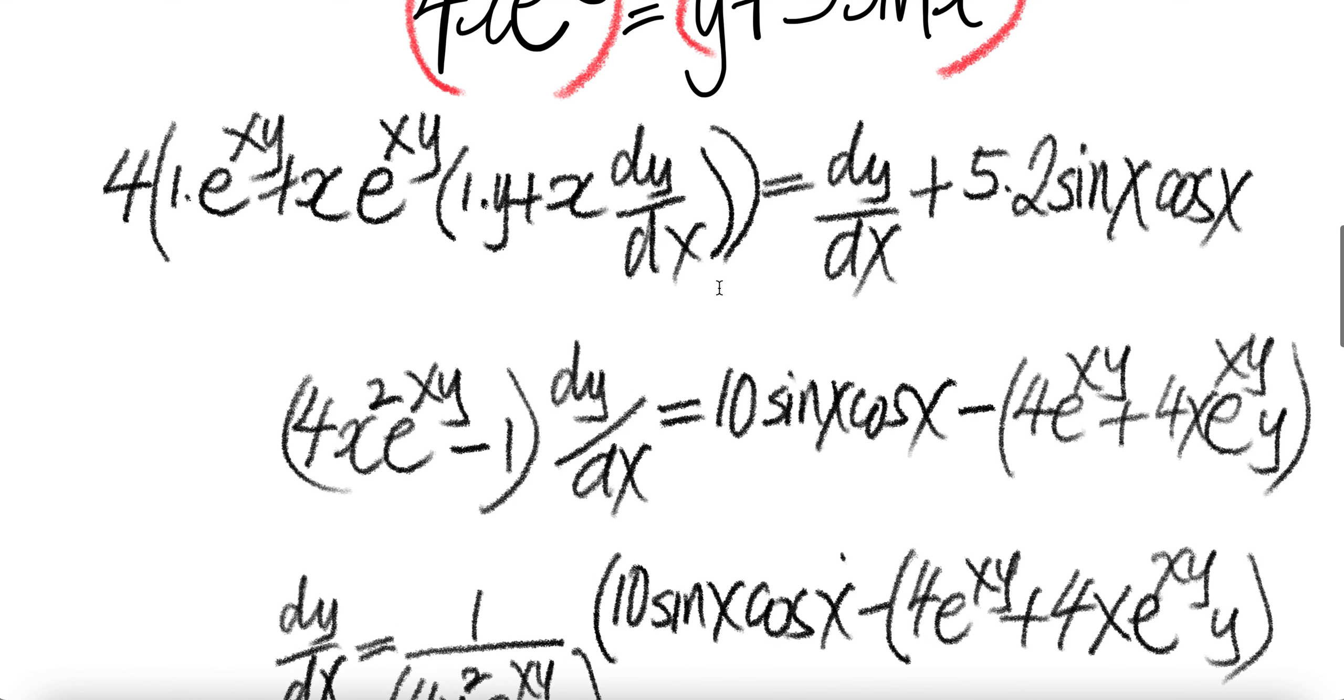Now we need to collect all the dy/dx terms. There's one piece here and then there is a second. This piece has 4x squared e to the power of xy minus one here. So this one handles the dy/dx. Now let's go to the right side. Five times two is 10 sine x cosine x minus this whole piece, which is e to the xy times x plus y.